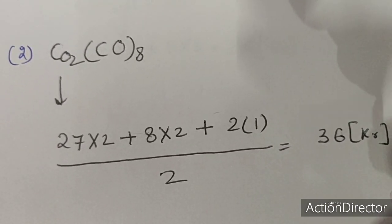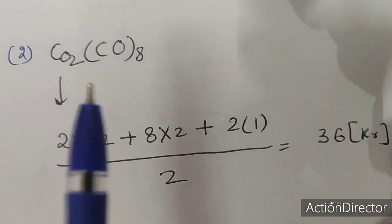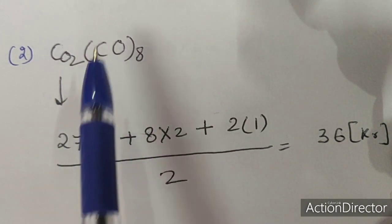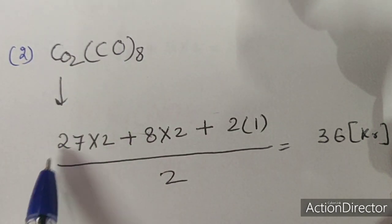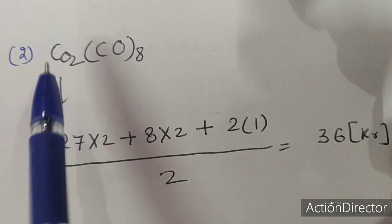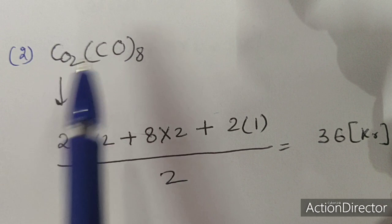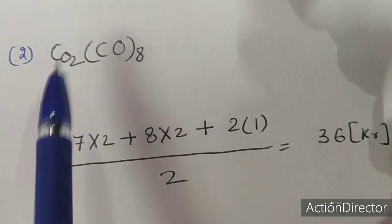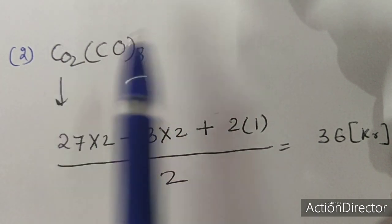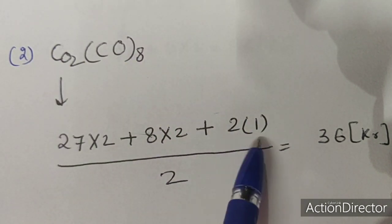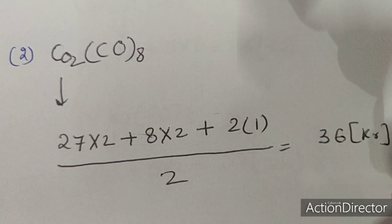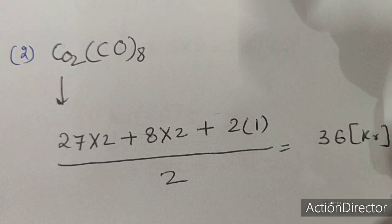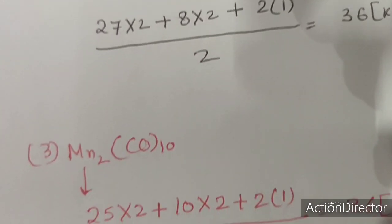The next example is Co2CO8. Cobalt's atomic number is 27, there are 2 metals, 8 ligands, and 2 metal-metal bonds. Again, the EAN becomes 36 — following the EAN rule.